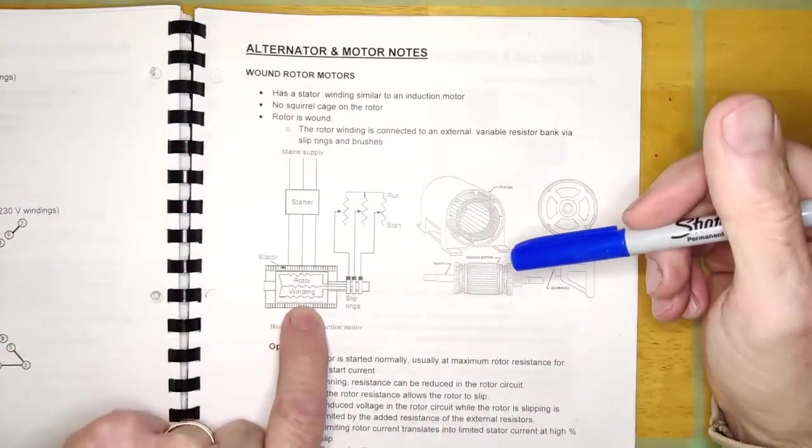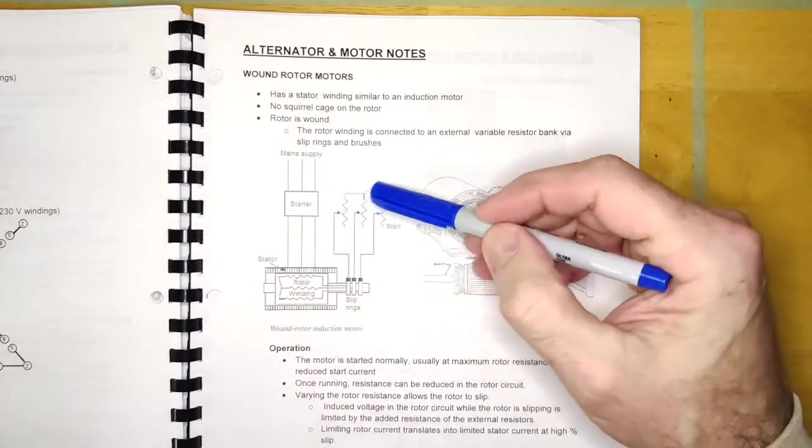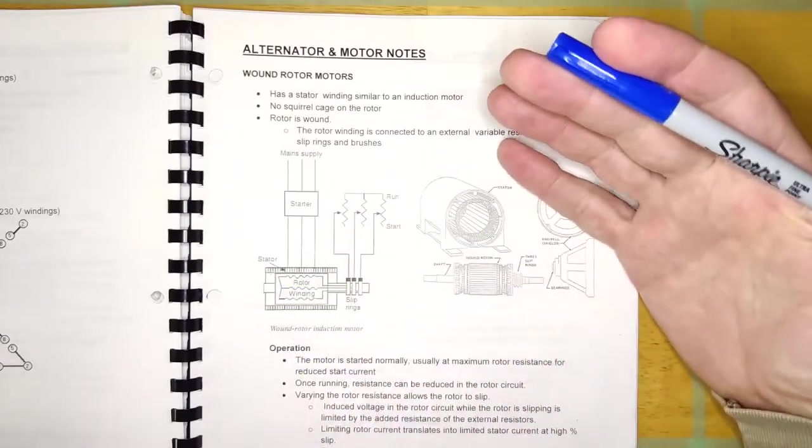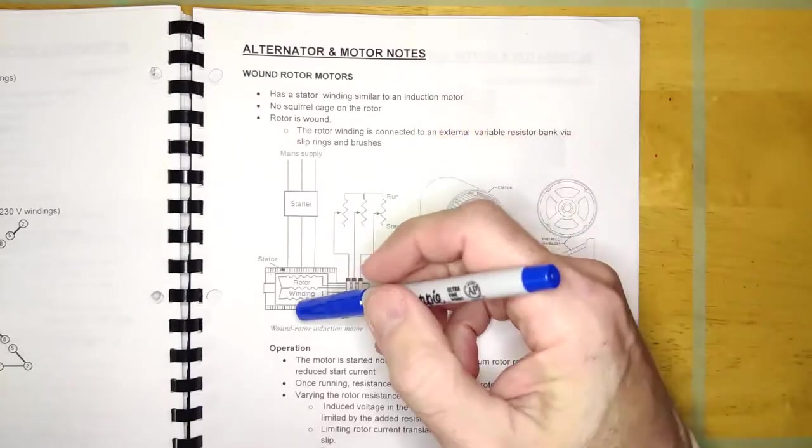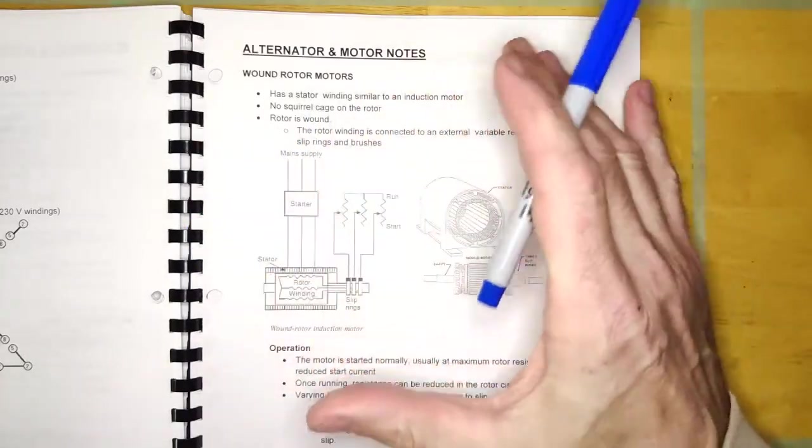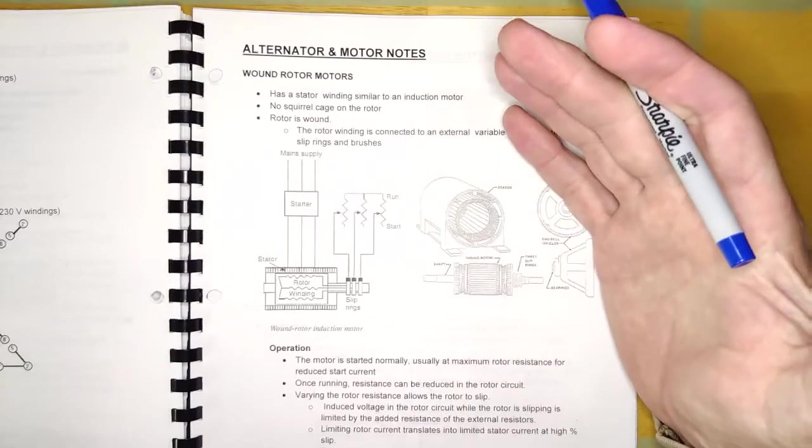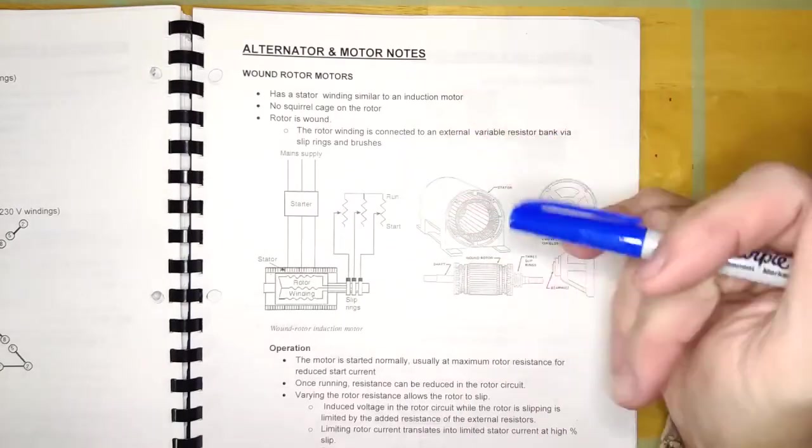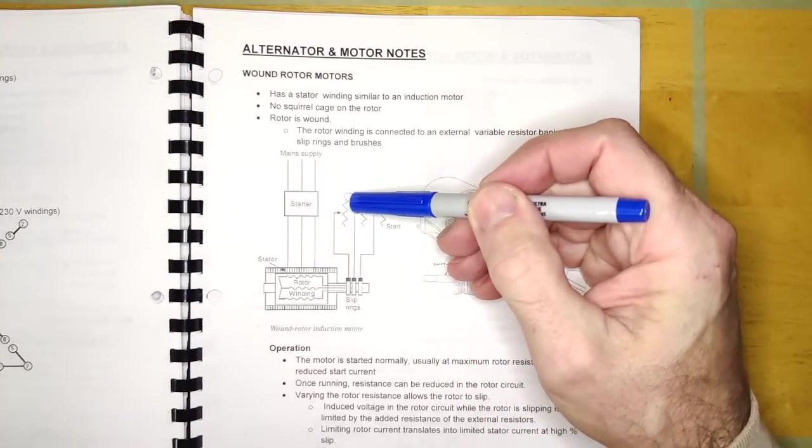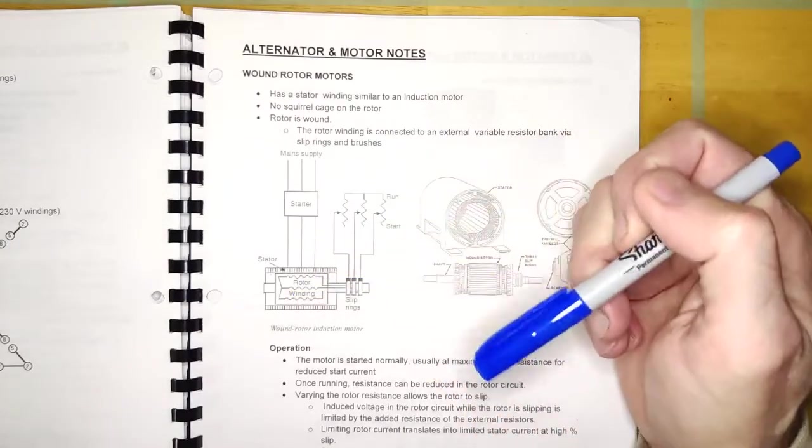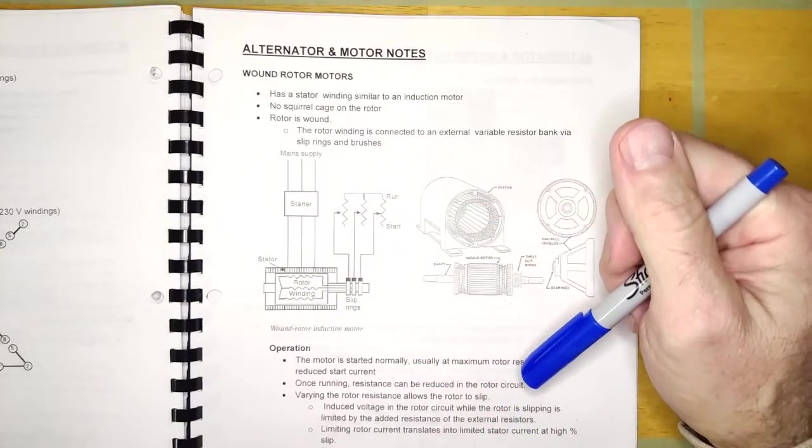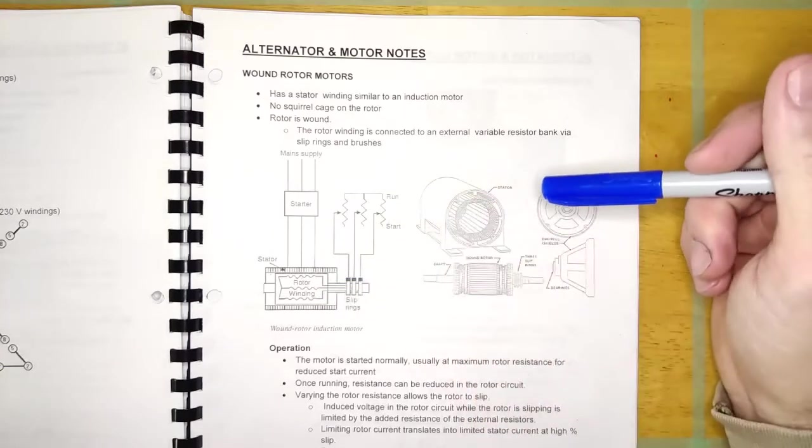Now, the way this thing would work is if you dialed all the resistance out of this external resistor bank, then this thing would run basically exactly like a regular three-phase induction motor. It would have a very low resistance winding. It would not tolerate any slipping or very little slipping. It would run at 1750 RPM if it was a four-pole motor, with 50 RPM of slip.